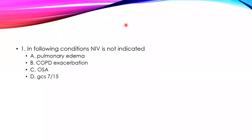Everyone answered correctly — the answer is D. In this condition, because the sensorium is low, applying NIV carries a risk of aspiration, so non-invasive ventilation is contraindicated when GCS is low. In the other conditions listed, NIV is indicated.